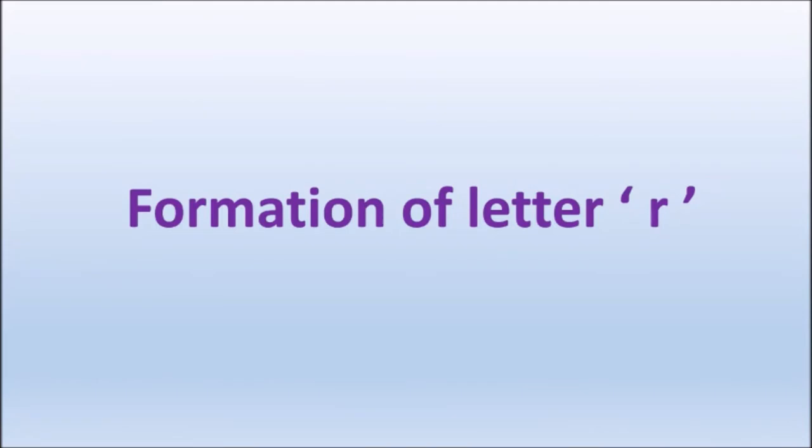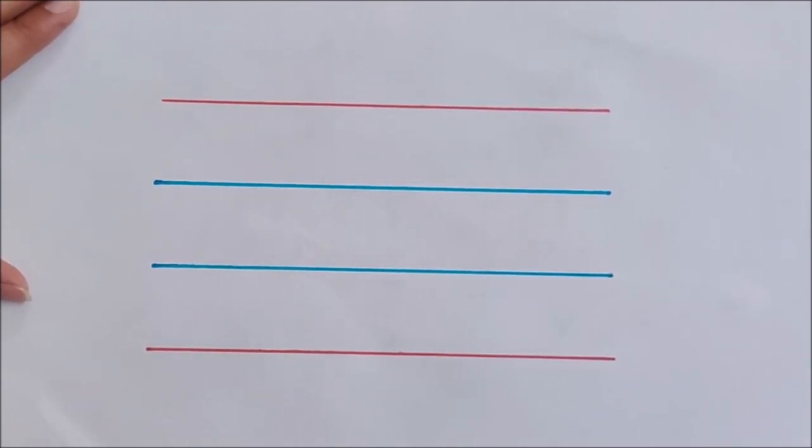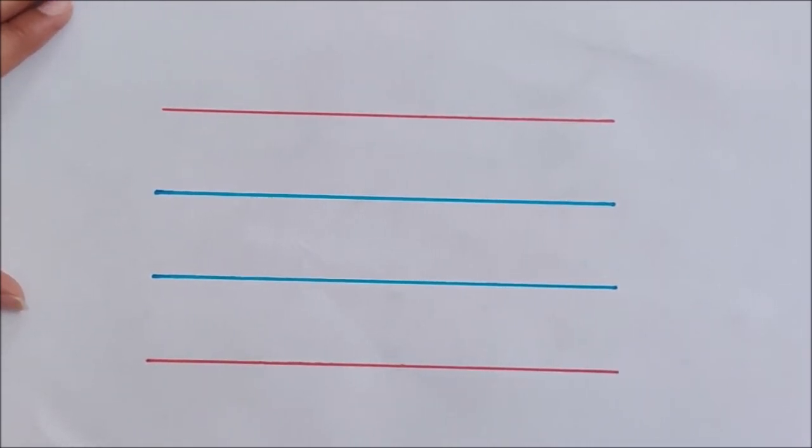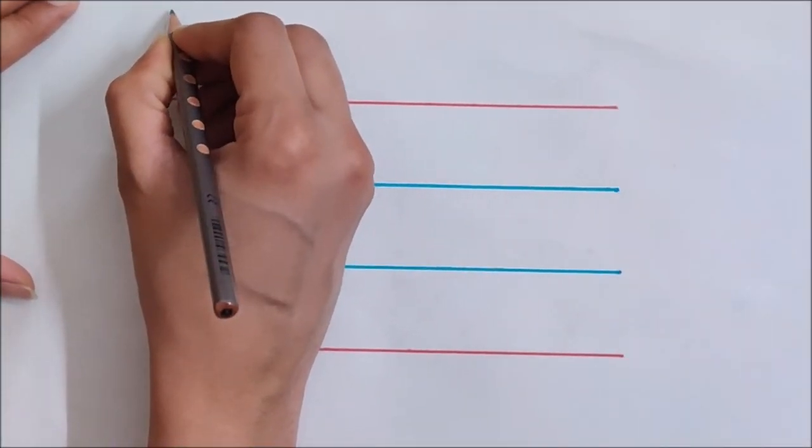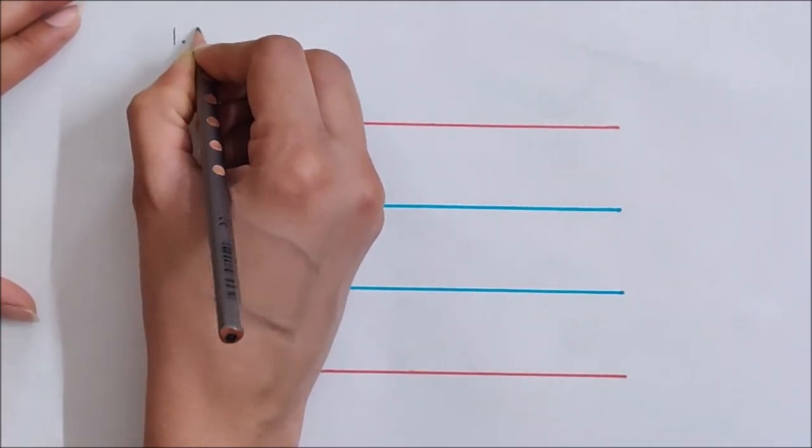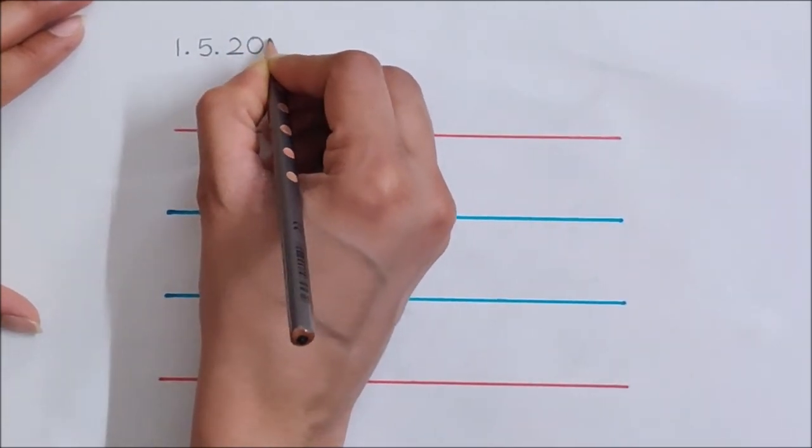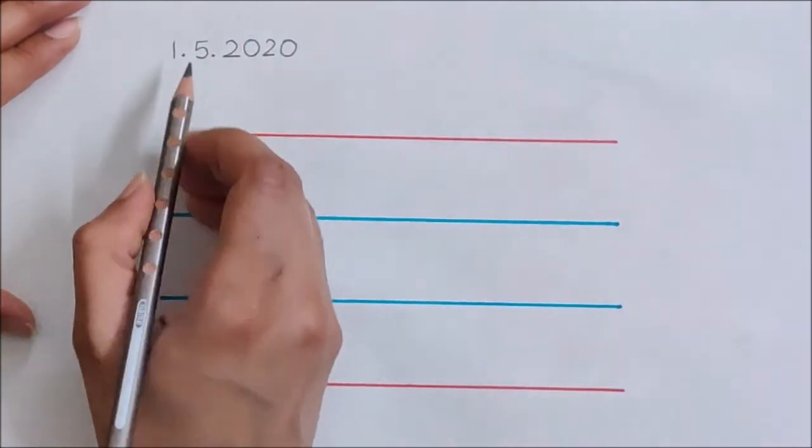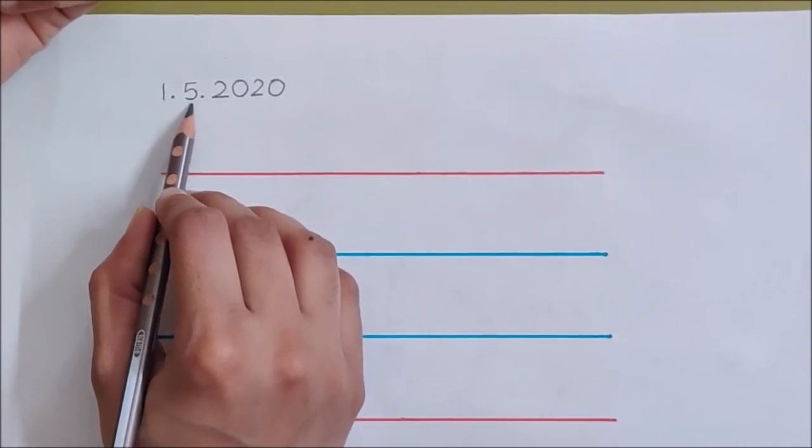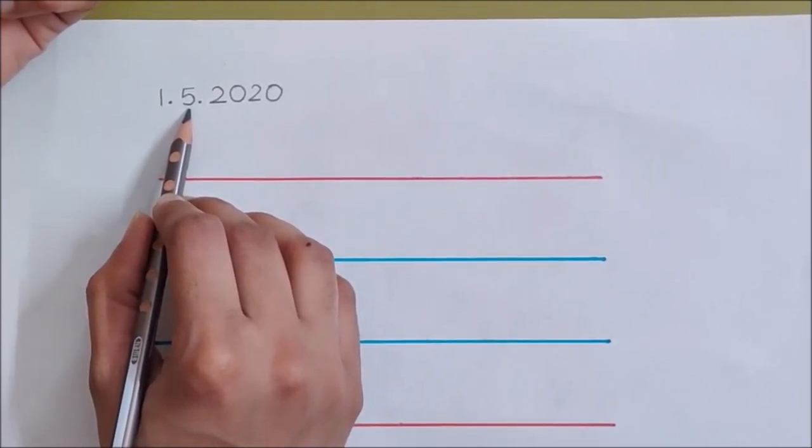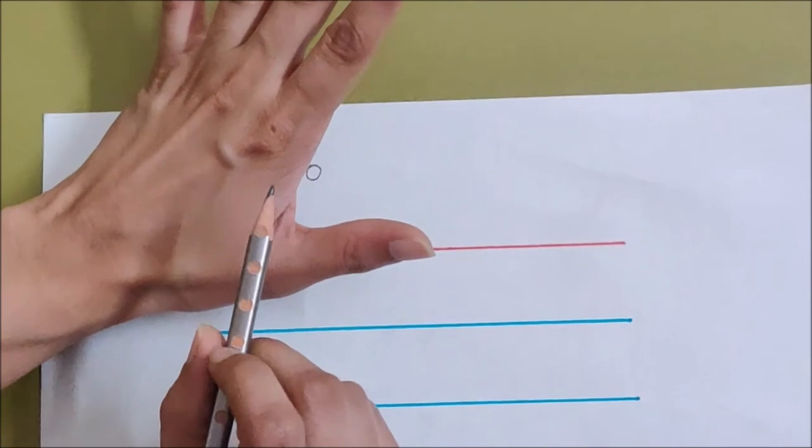Now we will see the formation of letter R. But before that, we have to write today's date. Today is May 1st, so we will write the date: 1.5.2020. I have written here 5 because April month is over and month of May has started. And May is the 5th month. It is the 5th month.